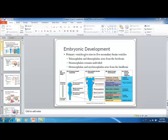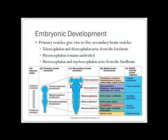We're doing central nervous system — one of the big lectures. First, let's talk about embryonic development. We're going to have our neural tube, which breaks into its primary vesicles: the prosencephalon, mesencephalon, and rhombencephalon.